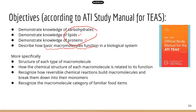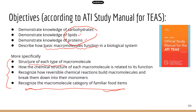Here is some specific information from the TEAS study manual. I think this is actually more helpful because it's more specific about what you need to know. For example, you need to know the structure of each type of macromolecule and how this chemical structure is related to the function. We always say that structure determines function. You also need to be able to recognize the reversible chemical reactions that make big macromolecules and the reactions that break them down.